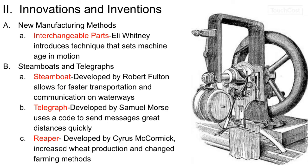The steamboat was developed by Robert Fulton — using a steam engine to push the boat in the water with a paddle, it would go faster and carry more products, making products cheaper, easier, and faster to ship. The telegraph was developed by Samuel Morse using a code — it's like today's text messaging. It sent electronic messages on wires over quick distances using dots and dashes. People would decipher the code and transcribe it into English, and then it moved around the world.